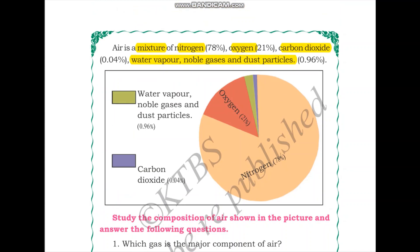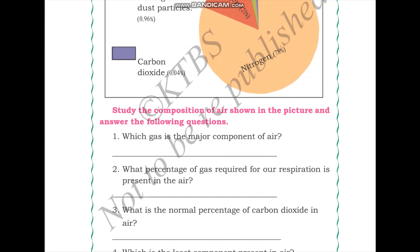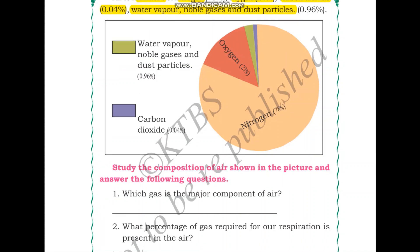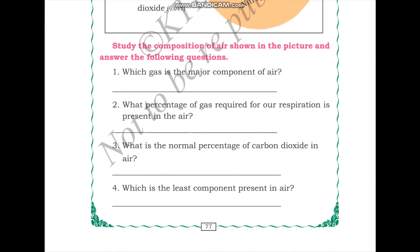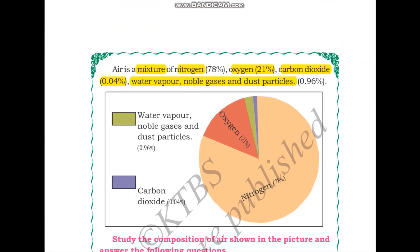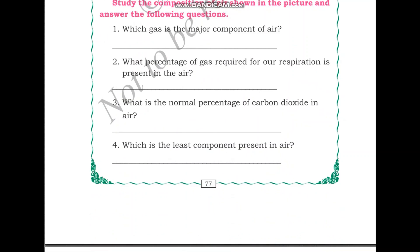Oxygen is 21%, so the answer for the second question is 21%. What is the normal percent of carbon dioxide in air? Carbon dioxide is 0.04%, as we can see in the diagram. Which is the least component present in air? From the chart, the purple section is smallest, occupying the least area. So carbon dioxide at 0.04% is the least component present in air.